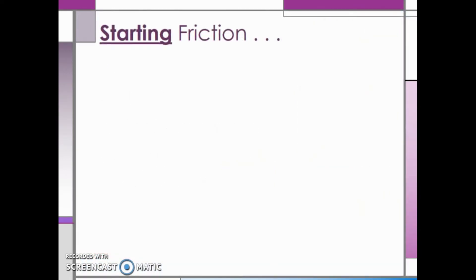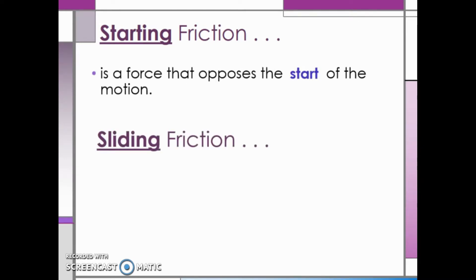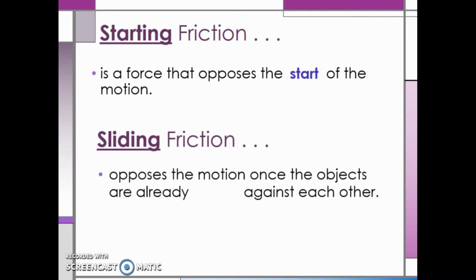Let's take a look at the types of friction moving objects encounter. Starting friction is a force that opposes the start of the motion. Sliding friction opposes the motion once the objects are already sliding against each other. It is very important to remember that starting friction is always greater than sliding friction. Imagine you are trying to push a heavy box across the concrete floor. It seems to take a lot more effort or force to start the box moving than to keep it sliding once it is moving. Since it takes more effort to start it, starting friction must be larger.